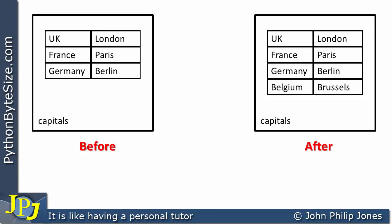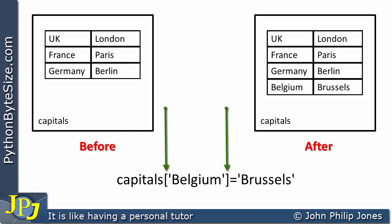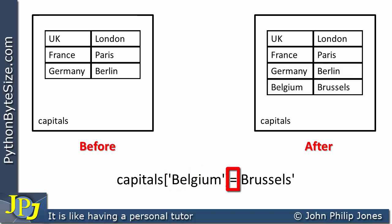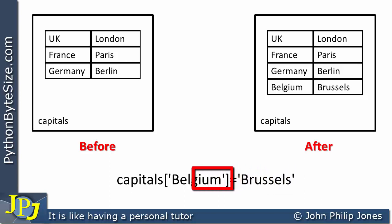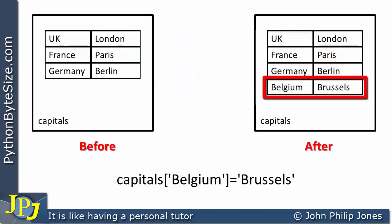The program statement responsible for adding the item where the key is Belgium and the value is Brussels is shown here. The syntax is straightforward: it refers to the dictionary, uses square brackets, and within the square brackets has the word Belgium in quotes — because Belgium is going to be a string. This refers to the key, and we assign to this key the value Brussels. Consequently, we can see the before and the after with Belgium and Brussels added to the dictionary.